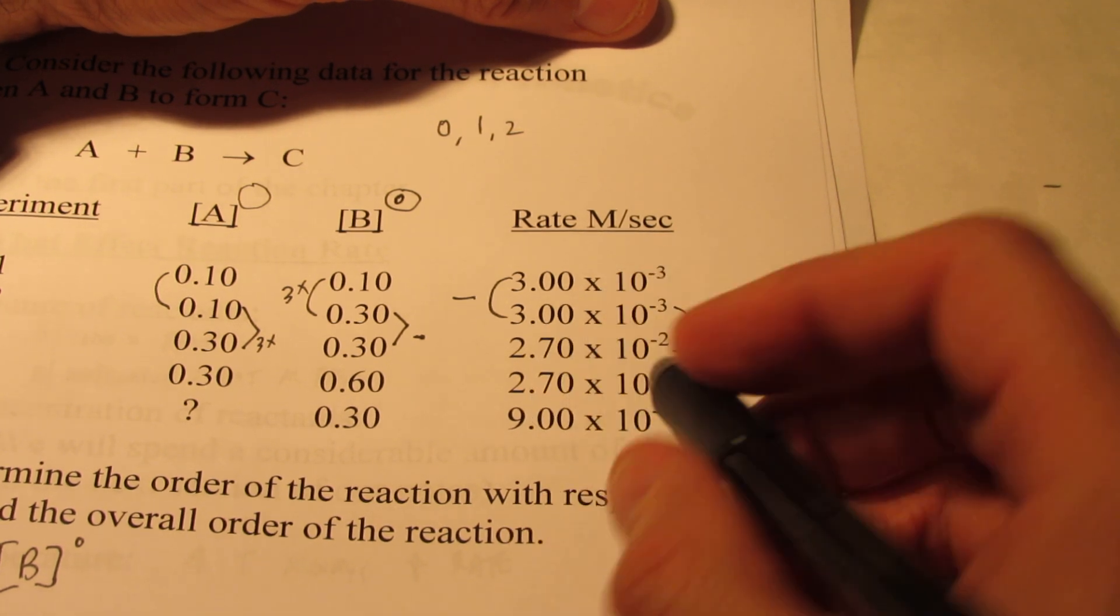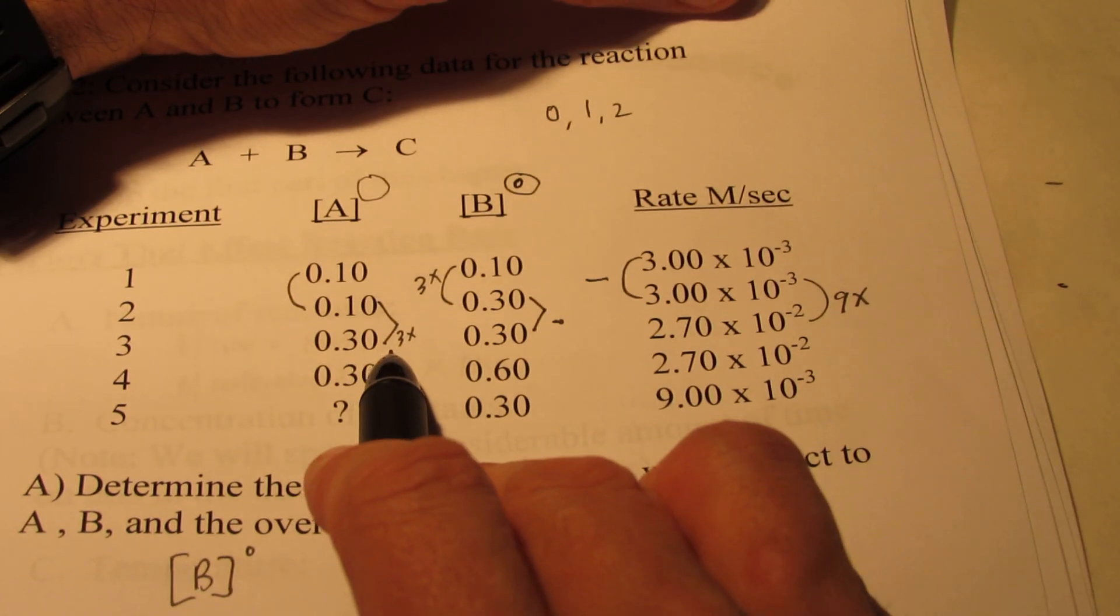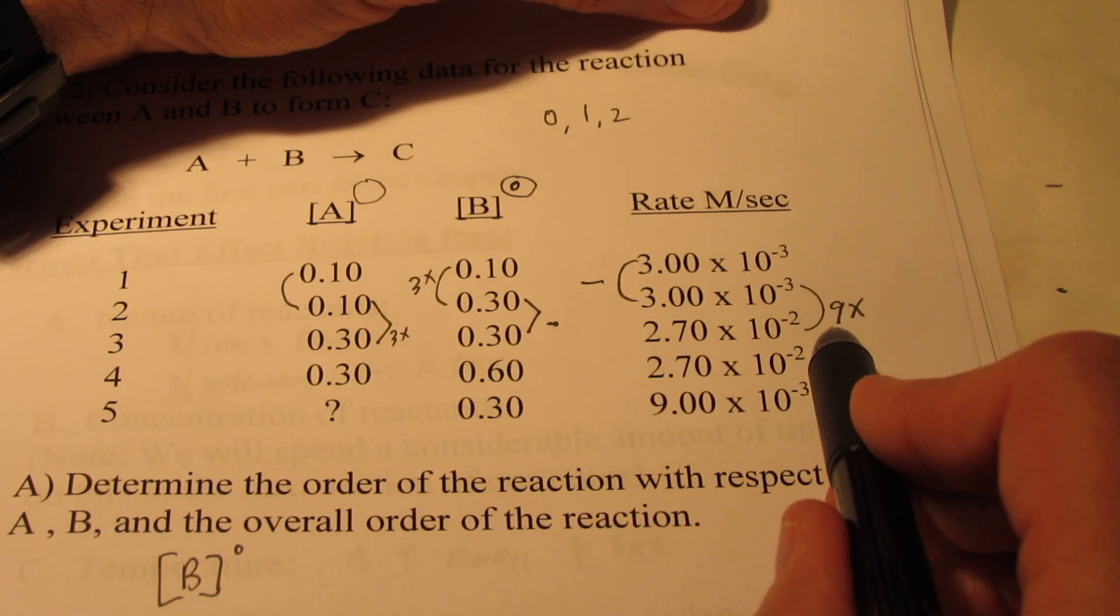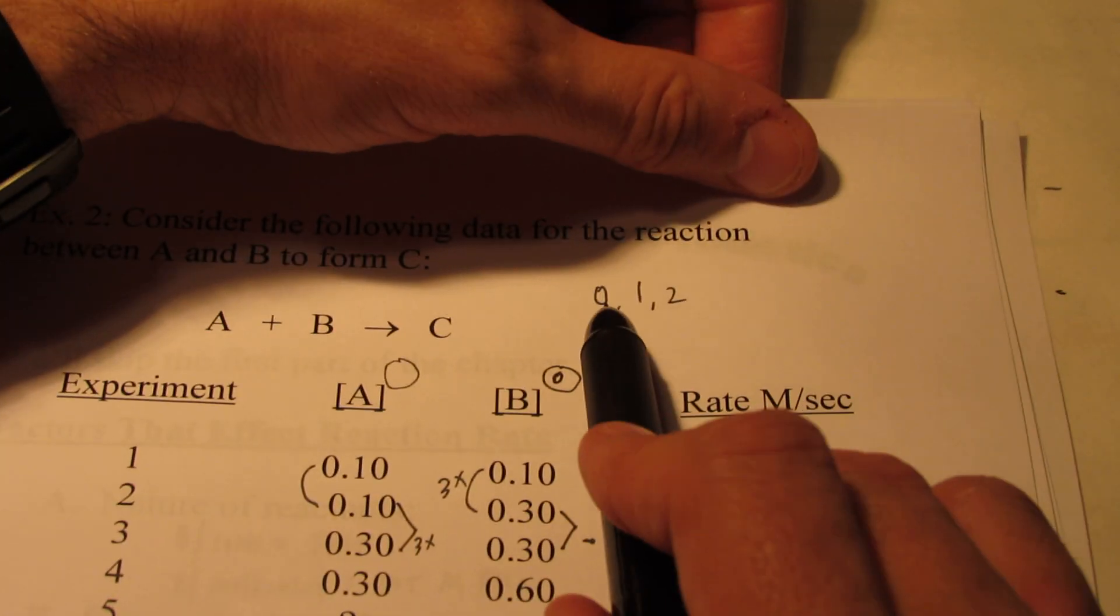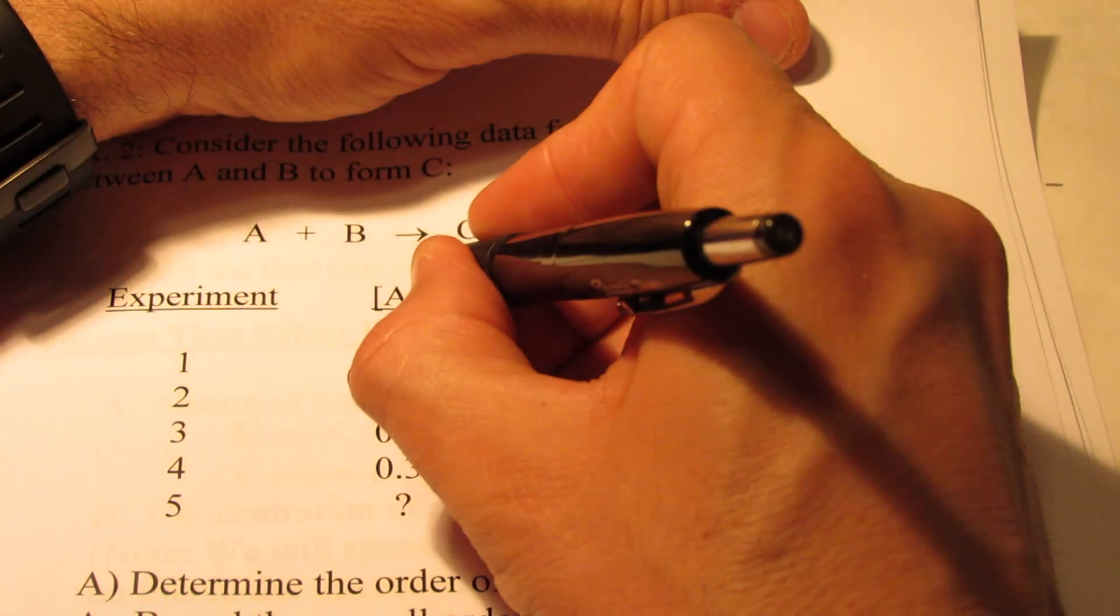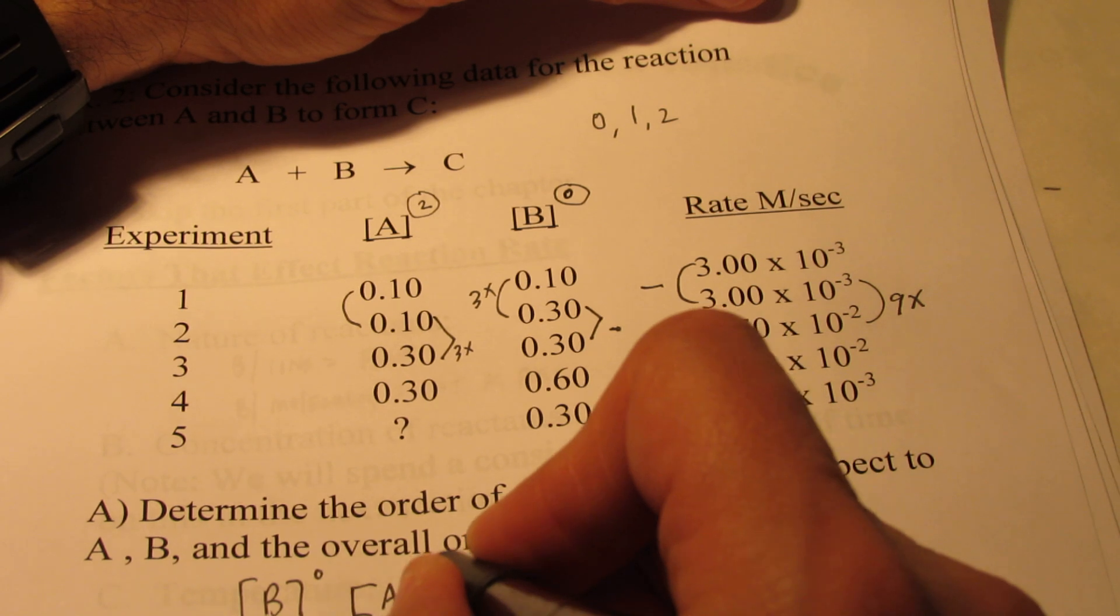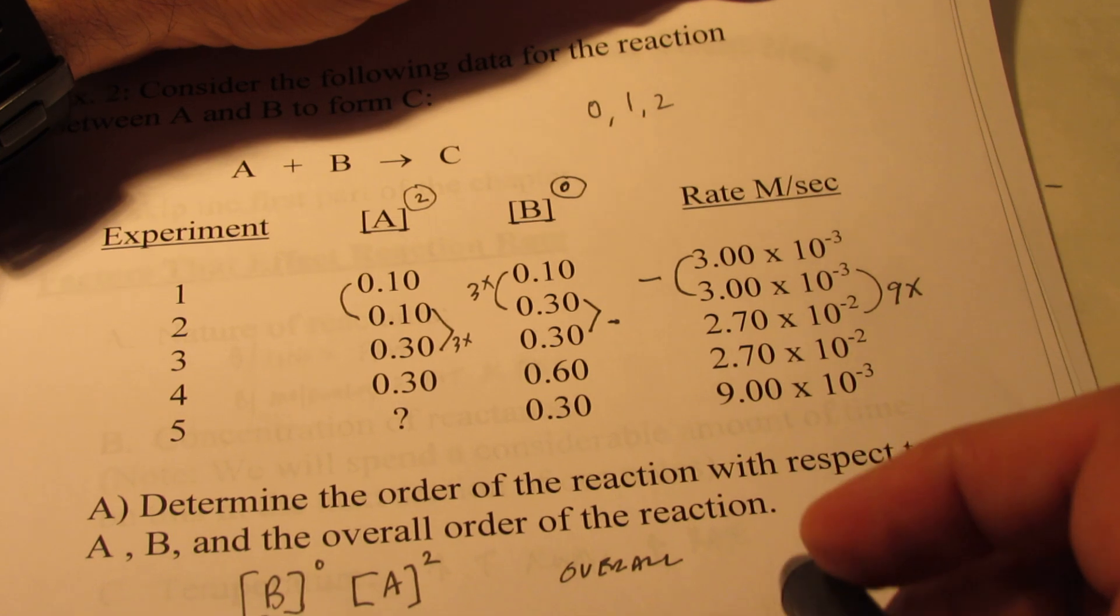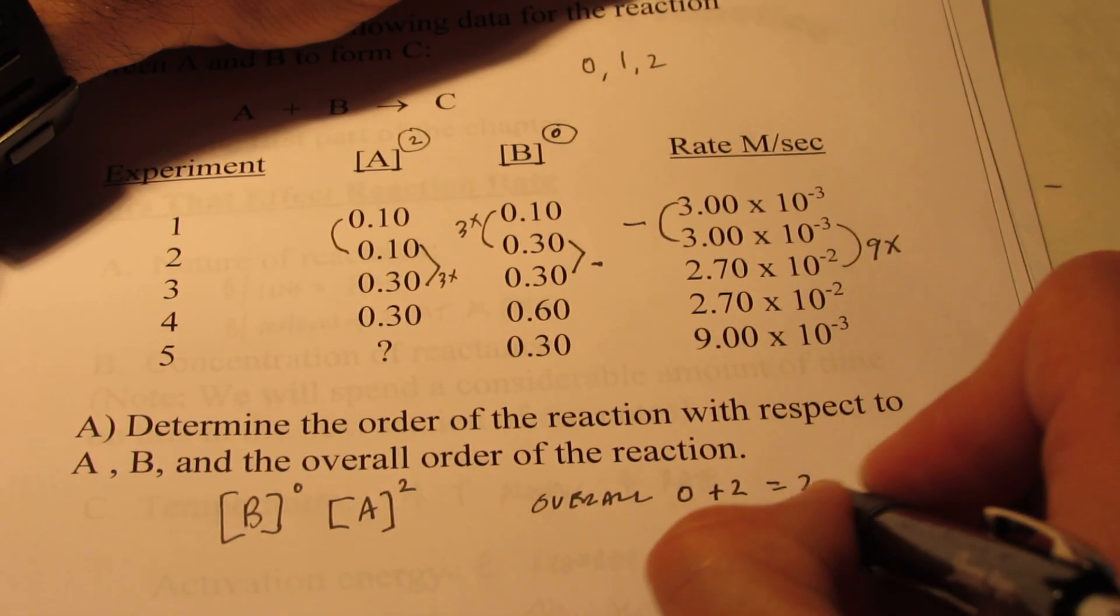Now if you put that in your calculator, you see that this goes up nine times. So tripling A without doing anything to B made my rate go up nine times. Well, how do I get from tripling something to nine-tupling something? Is it to the zero, first, or second power? If you said second power, good job. So A has an order of two. The overall order, remember, is the sum of A plus B. So zero plus two, which is two.